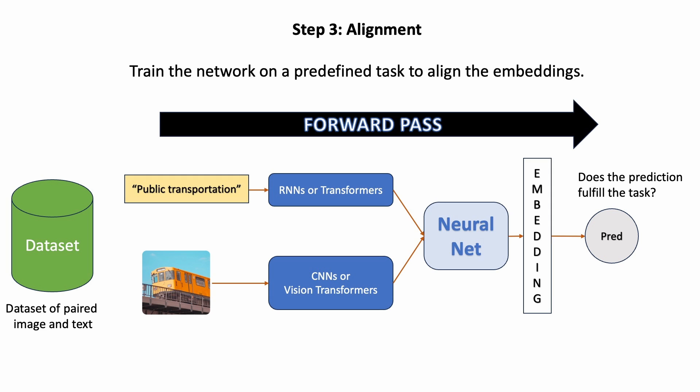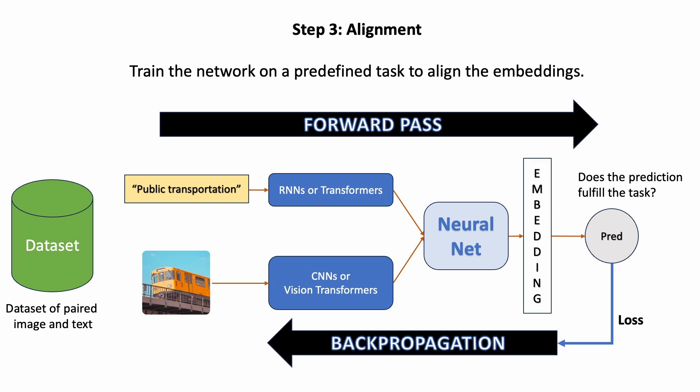After fusing the two representations, we train the neural network on a predefined task to align these embeddings via backpropagation. We take a dataset, forward pass the data through the network to receive an output, calculate the loss of the network's output to our target solution, and then update all the weights in the neural network to optimize the alignment of this joint embedding space. The choice of this training task often dictates what network architecture, loss function, and datasets we use for training.